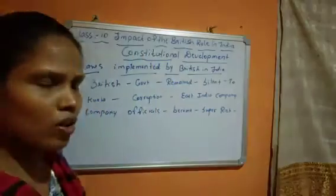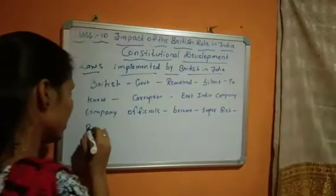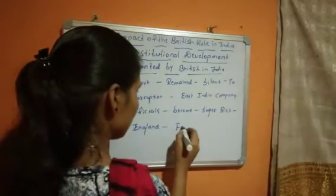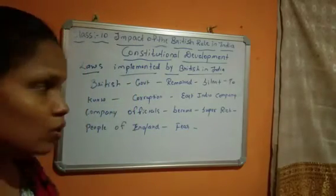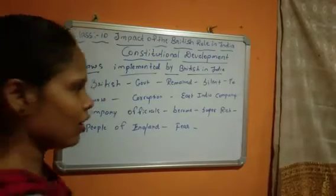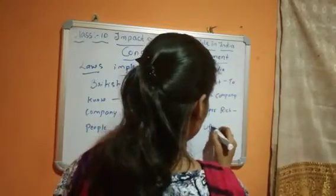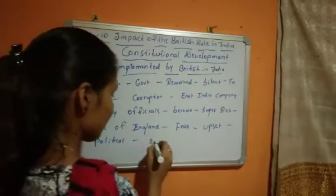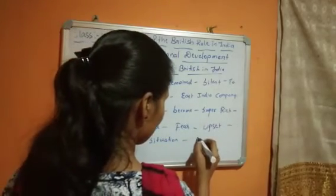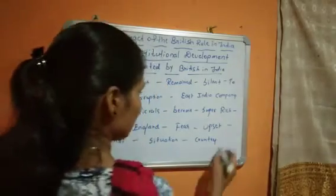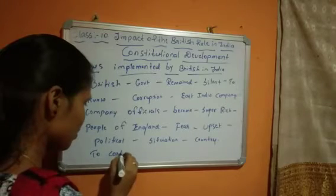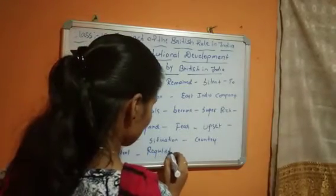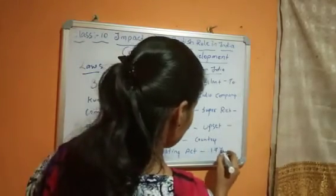Company officials became very rich. But people of England got fear because these rich people could disturb the political situation of the country. To control the misuse of authority, the Regulating Act was passed in the year 1773. In this way, the Regulating Act came into force to control the misadministration of the British East India Company. The government of England implemented the Regulating Act.